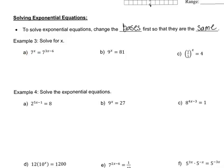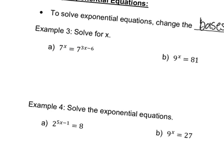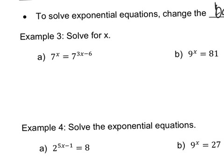For this problem here, it becomes really clear. If we're solving for x, we can see that both sides have a base of 7. So if they both have the same base, you can cancel that base out. I can cancel out these 7s because both sides have a 7. So x comes down, and then 3x minus 6 comes down — the exponents get to come down.